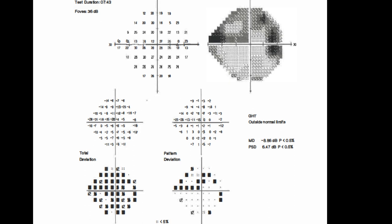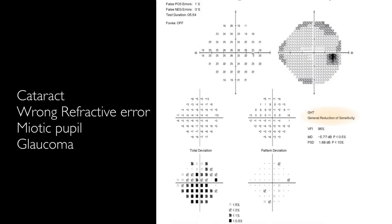Generally, the pattern deviation looks less darker than total deviation plot in glaucoma patients.